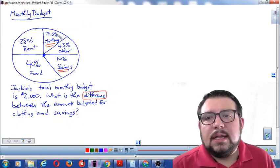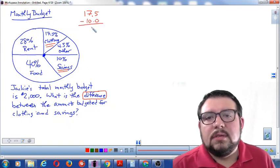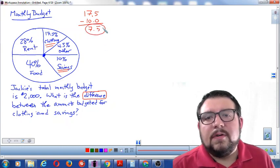So I'm going to take that 17.5 percent from the clothing and subtract the 10 percent from the savings. When I subtract, I'm going to get 7.5 percent. So 17.5 minus 10 is 7.5, so I need to find that 7.5 percent.